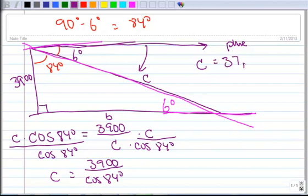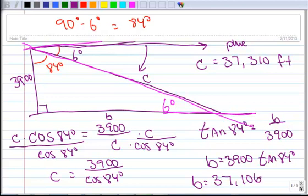And then we want to calculate B. So I could use lots of different things at this point. I'm going to use tangent. We haven't used tangent very well. So the tangent of 84 degrees, well, that's opposite over adjacent. So that's going to be B over 3900. So I'm going to multiply both sides by 3900. So B is going to be 3900 times the tangent of 84 degrees. So B is going to be 37,106 feet. So there's two examples using angle of elevation and angle of depression. That's what we have.